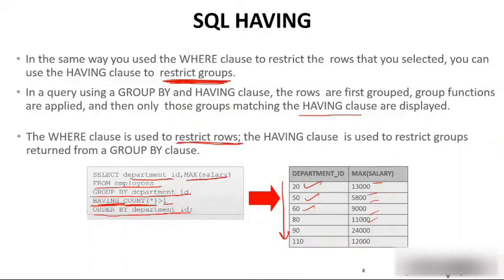In order to filter group functions, you use HAVING. The correct query is: SELECT department_id, MAX(salary) FROM employee GROUP BY department_id HAVING COUNT(*) > 1 ORDER BY department_id. In a query using GROUP BY, the rows are first grouped, group functions are applied, and then only those groups matching the HAVING clause are returned. The WHERE clause is used to restrict rows but cannot be used with group functions — the HAVING clause is used to restrict groups.